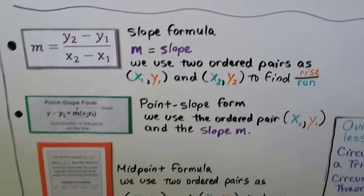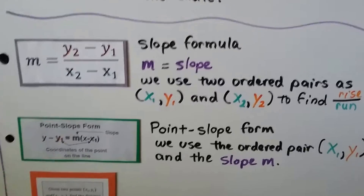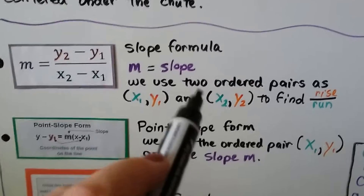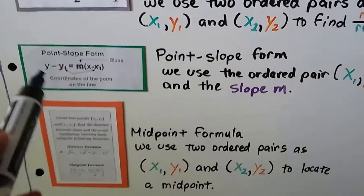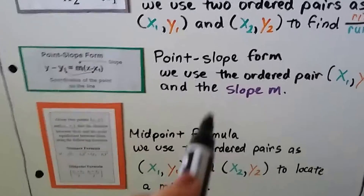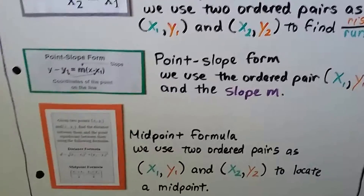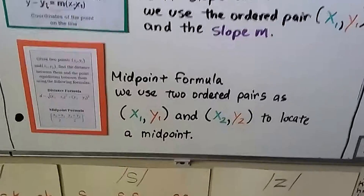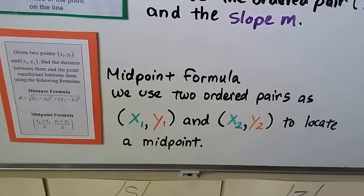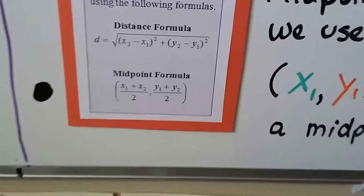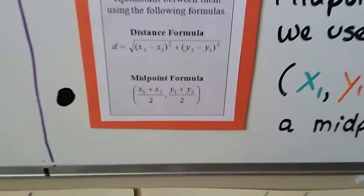Now I want to remind you of some formulas we'll be using. The slope formula uses two ordered pairs as (x₁, y₁) and (x₂, y₂) to find the rise over the run. Point-slope form uses the ordered pair (x₁, y₁) and the slope M to write a point-slope equation. And the midpoint formula uses two ordered pairs (x₁, y₁) and (x₂, y₂) to locate a midpoint.